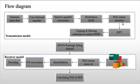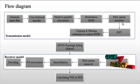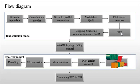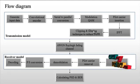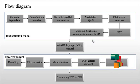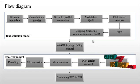After QAM modulation, pilot carrier insertion is used to enable the voice to be processed. Then Inverse Fast Fourier Transform (IFFT) is applied, followed by the clipping and filtering technique to reduce the PAPR — the peak to average power ratio.